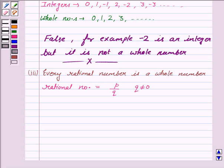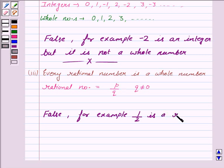So, the given statement is false because, for example, 1 by 2 is a rational number because it is of the form P by Q. But, it is not a whole number because whole numbers are 0, 1, 2, 3 and so on.